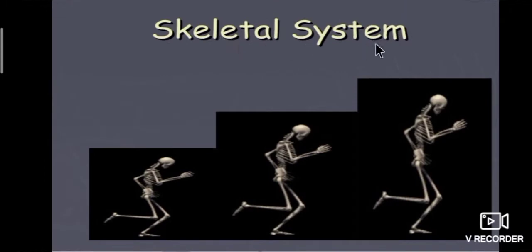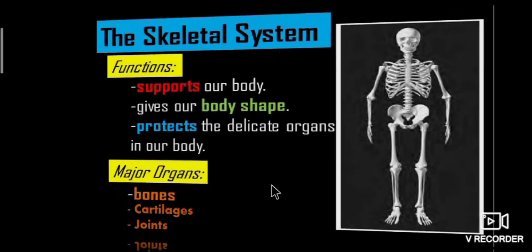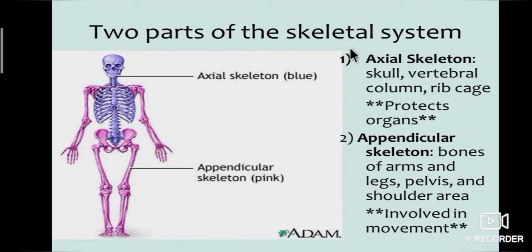First one is skeletal system. Skeletal system supports our body, gives it shape, and protects the delicate organs. Bones, cartilages and joints are the major organs of the skeletal system. The two parts are axial skeleton system, consisting of skull, vertebral column and ribcage, which protects organs; and appendicular skeleton system, consisting of bones of arms and legs, pelvis and shoulder area, which is involved in body movement.